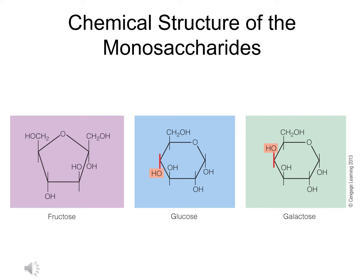Fructose, on the other hand, is completely different. Whereas glucose and galactose are referred to as hexoses, which means six sides, fructose has five sides, so it is noted as being a pentose. The way that the molecules are arranged is what determines how sweet they're going to be. The arrangement of fructose stimulates the taste buds to produce a very sweet sensation when we consume a food which contains fructose.